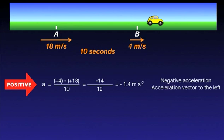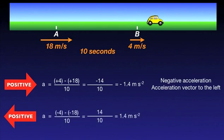Now if we take the positive direction to be to the left, the change in velocity is minus 4 minus minus 18 equals 14 meters per second. And this divided by 10 seconds gives us an acceleration of 1.4 meters per second squared. The positive value tells us again that the acceleration is to the left.